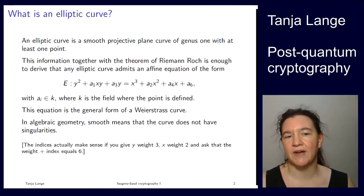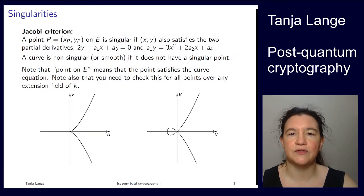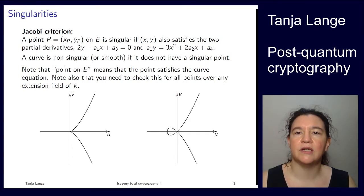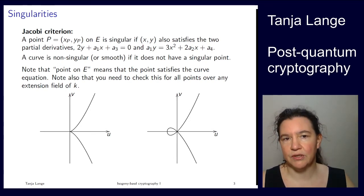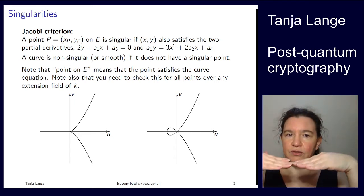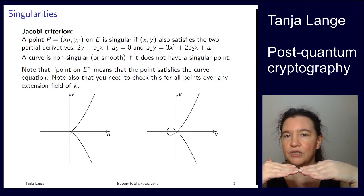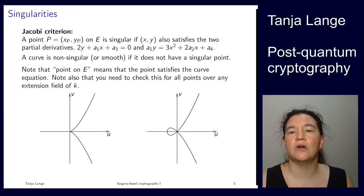This shape of elliptic curve is what we call the Weierstrass curve. Singularities is the Jacobi criterion, where a point is singular if it also satisfies the two partial derivatives. It has to be on the curve and satisfy these two equations. Point on the elliptic curve means you look over the field where it's defined and all extension fields. It's a geometric property looking over the algebraic closure. A curve is non-singular if it doesn't have a singular point.